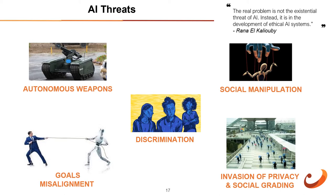Invasion of privacy and social grading: it is now possible to track and analyze an individual's every move online and in their daily life. Cameras are nearly everywhere and facial recognition algorithms know who we are. Misalignment between our goals and the machines: if we aren't clear with the goals we set for AI machines, it could be dangerous. For example, a command to 'get me to the airport as quickly as possible' might have dire consequences if the machine isn't armed with the same values we have, potentially causing a trail of accidents.